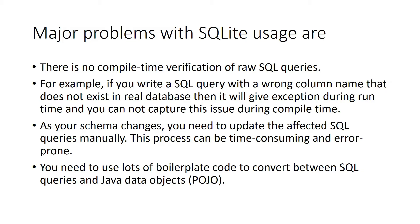SQLite requires lots of boilerplate code to convert SQLite queries into Java data objects. There is so much code that we have to repeatedly write, and it is not easy to convert query results into Java objects — also known as POJOs (Plain Old Java Objects). But by using Room API, we can easily convert the database data in terms of classes.